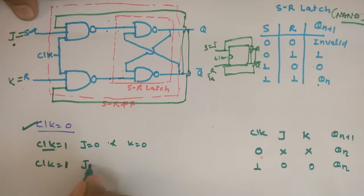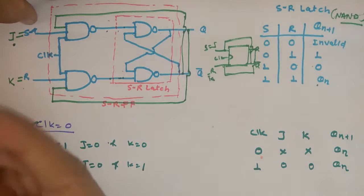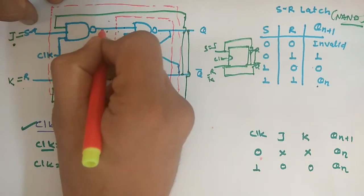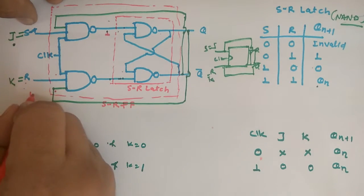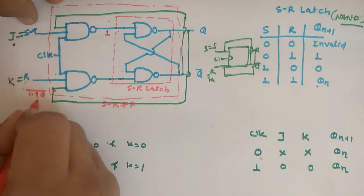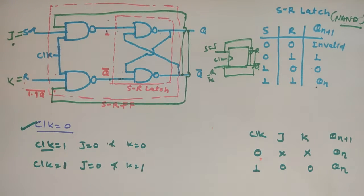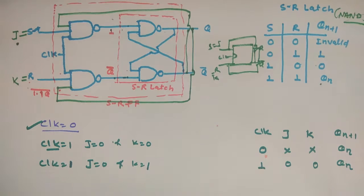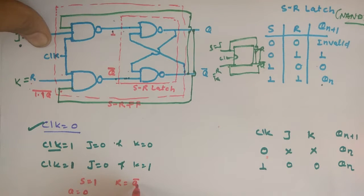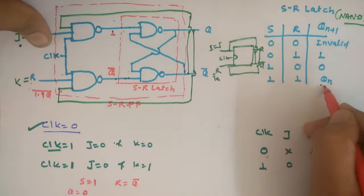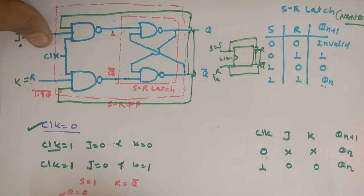Third condition: when clock is 1 and J is equal to 0 and K is equal to 1. When J is equal to 0, zero into something gives 0 and zero complement gives 1. This is also 1, and this is Q, so here it will be 1 into 1 into Q — that gives Q bar. So now when this condition arrives, the output at S is 1 and at R is Q bar. Now consider if Q is equal to 0: S is equal to 1 and R is equal to 1 (since zero complement is 1), so S=1 and R=1 will give Qn, meaning the output Q(n+1) will be 0 only.